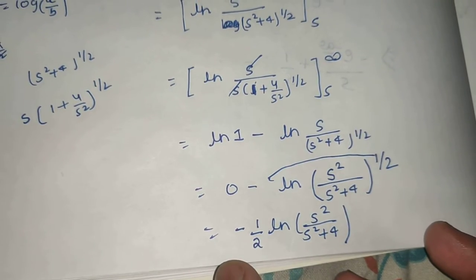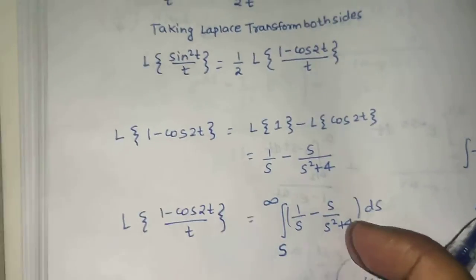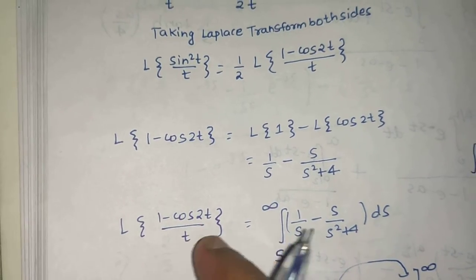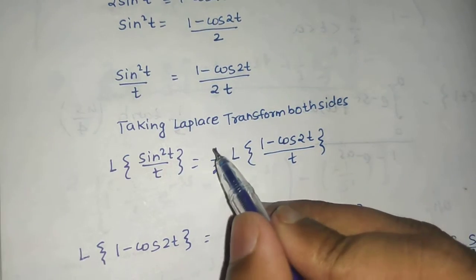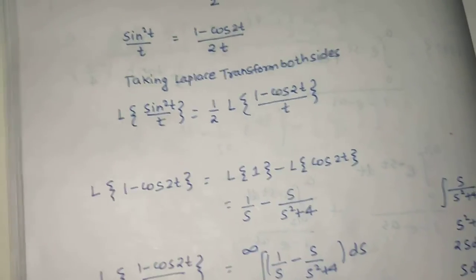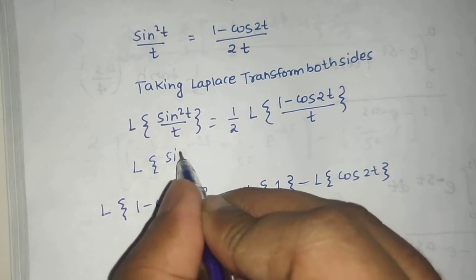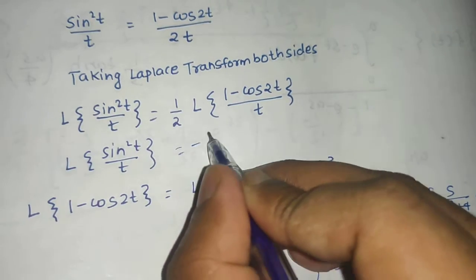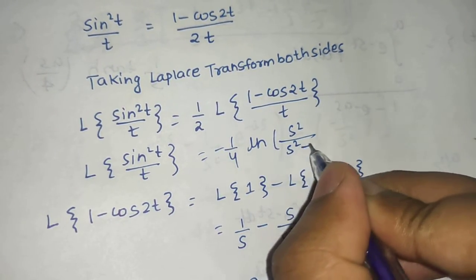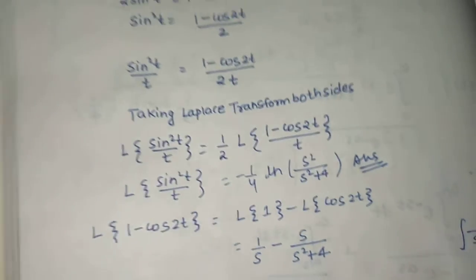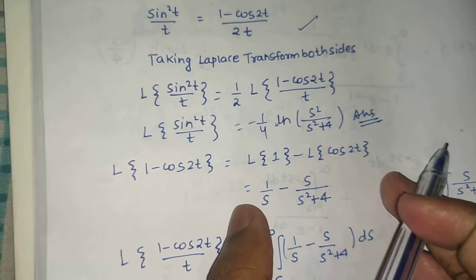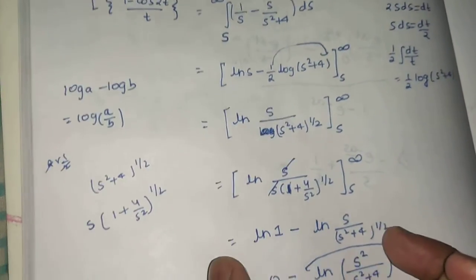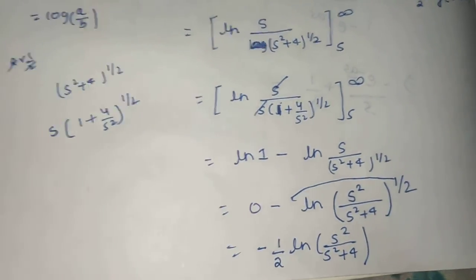This is what we got for the Laplace of (1 minus cos 2t) / t. Now we need to multiply by the extra factor of one half. So we can finally write the Laplace of sin² t / t as one half times one half, which is minus 1/4 times ln(s² / (s² + 4)). This is the final answer. The approach used basic trigonometry, the division by t property of Laplace transforms, and some logarithm and basic integration.